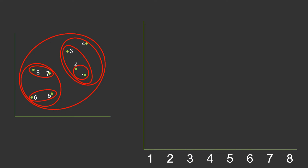First we prepared the cluster of one and two — these are the cluster points we have, and this is the Euclidean distance between them. Then we joined one and two at that Euclidean distance, then combined five and six, which have a slightly greater Euclidean distance. Then we combined one, two, and three — the height in the dendrogram depends on the Euclidean distance between these points. Then we combined seven and eight.